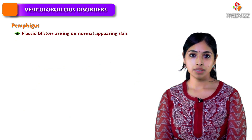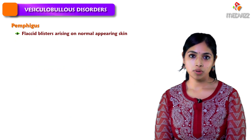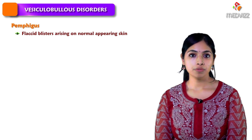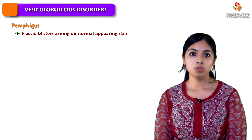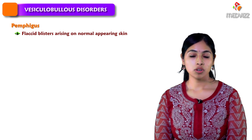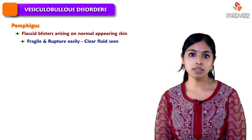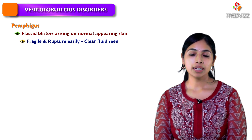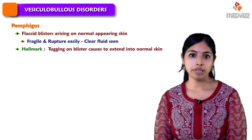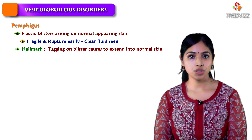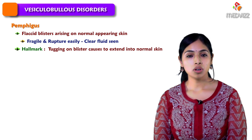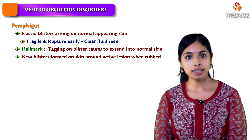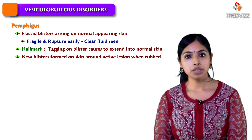In Pemphigus, we see flaccid blisters which can occur anywhere on the body. These blisters usually arise on normal-appearing skin, and exposure to UV radiation may exacerbate the disease. These flaccid blisters are often fragile and rupture easily, with clear fluid present inside. A classic hallmark is extension of the blister into uninvolved skin when pulling on the periphery, and rubbing surrounding an active lesion causes formation of new blisters.